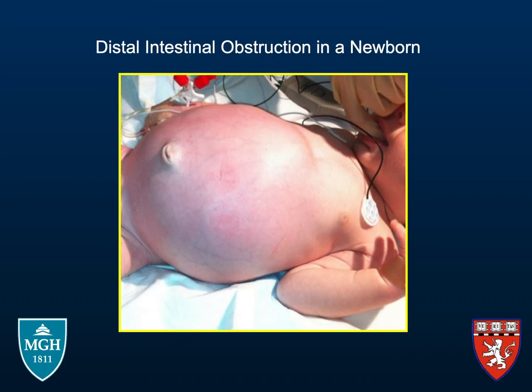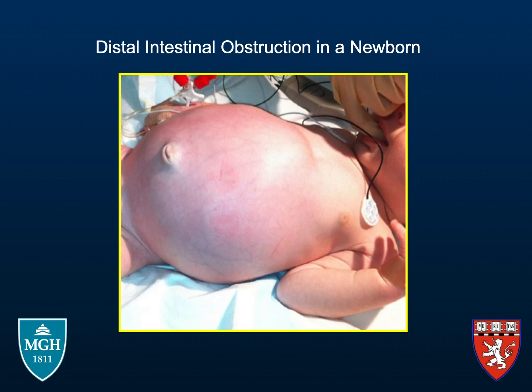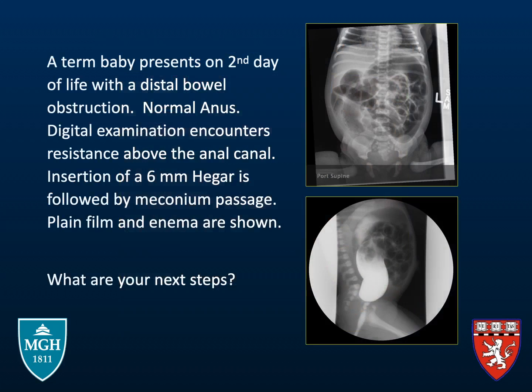This baby is a day-of-life two infant who presented with distended abdomen and failure to pass meconium. Her physical examination included resistance above the anal canal on digital rectal exam. When we passed a 6mm Hager dilator, she followed by passing meconium. The x-rays and the contrast study are shown to the right.